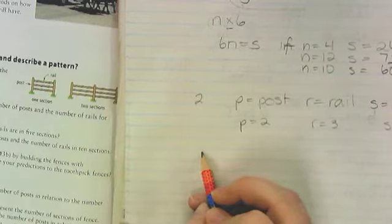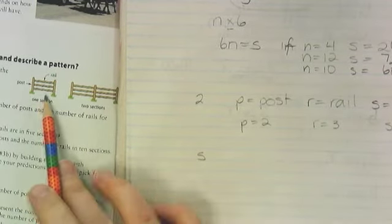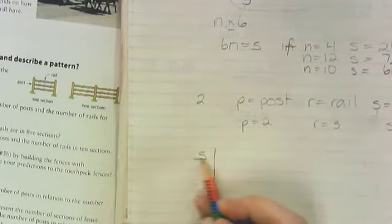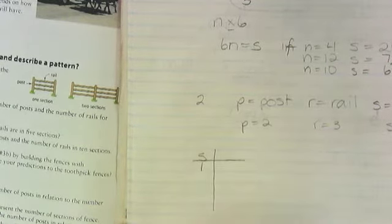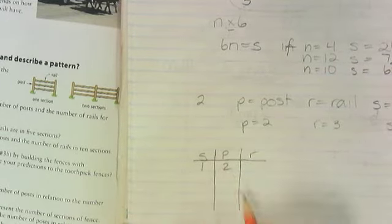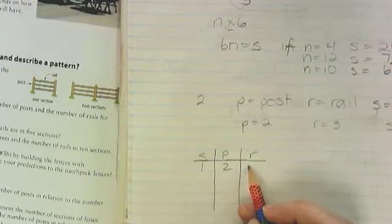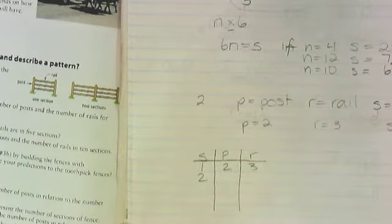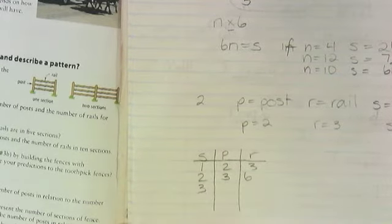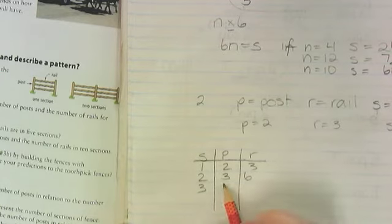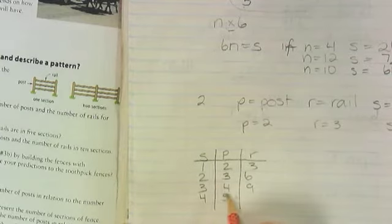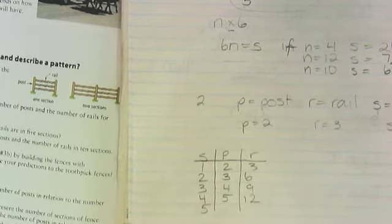So for every section, if you look at this and I create a table, for one section, how many posts do I have? Two. And how many rails do I have? Three. What about for two sections? Three posts and six rails. What about for three sections? Four and nine. What about for four sections? Five and twelve. What about for five sections? Six and fifteen.